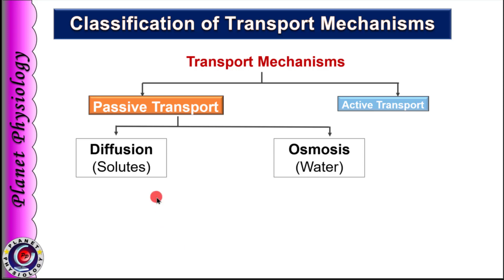Passive transport includes diffusion and osmosis. Even though both are passive mechanisms, diffusion deals with transport of solutes whereas osmosis is concerned with movement of solvent molecules. As water is the predominant solvent in the body, osmosis is related to movement of water molecules.